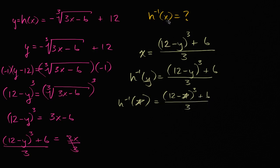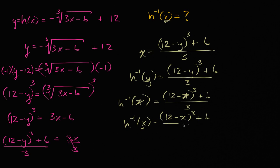Or if we just want to call the input x, we could say h inverse of x is equal to 12 minus x to the third plus six over three. This might be a little bit confusing because now x could be considered a member of the range and we're mapping back to a member of the domain. But either way, we can call the input to a function practically anything. That is our inverse function that essentially unwinds what our original function does.